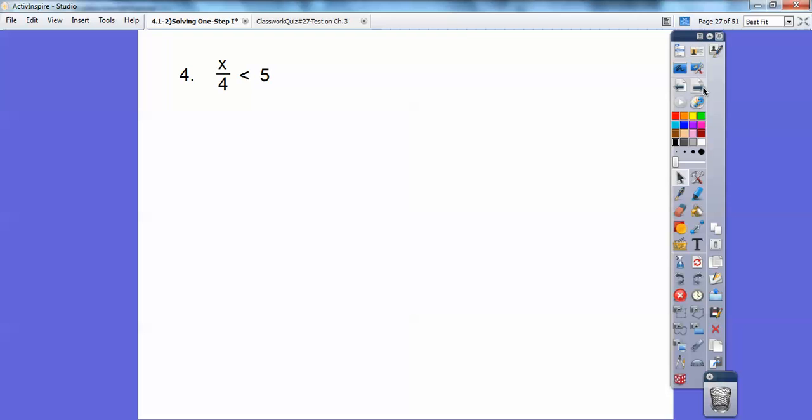Here's number 4. x over 4 is less than 5. Just like solving equations, if it was x over 4 equals 5, you would multiply both sides by 4. So go ahead and multiply both sides by 4, and you get x is less than 20.